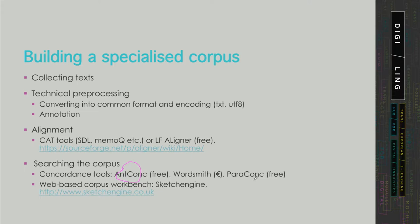It is important to know that Paraconc offers no alignment functionality, so your texts have to be pre-aligned if you want to use parallel concordancing with Paraconc. In the remainder of this course, we shall be using Sketch Engine. Sketch Engine is not free, but there are quite flexible licenses available, and for students of this course, licenses for Sketch Engine are provided, so you will be able to work with it.